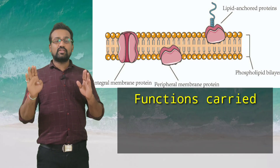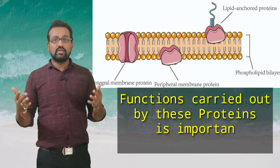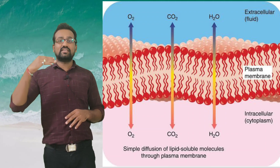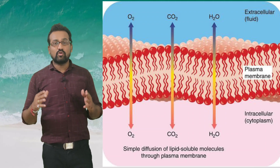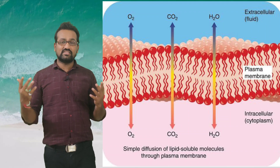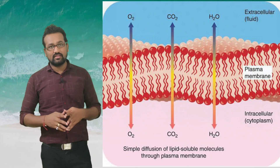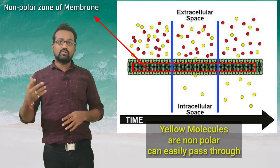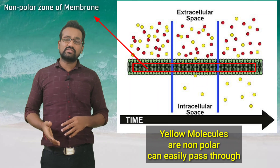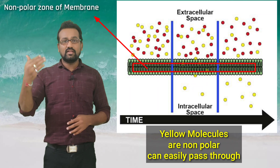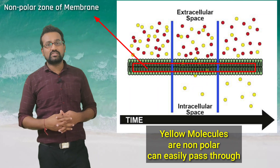What functions these proteins perform is most important to discuss. Generally, the membrane performs the function of exchanging various molecules. Molecules that are nonpolar are exchanged by the membrane directly, because the internal side of the membrane is nonpolar. Such molecules directly diffuse from outside to inside depending upon concentration — if the concentration is higher on the outside, the molecule directly diffuses through the membrane.